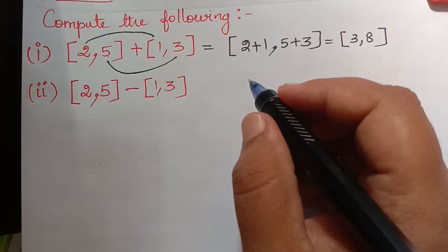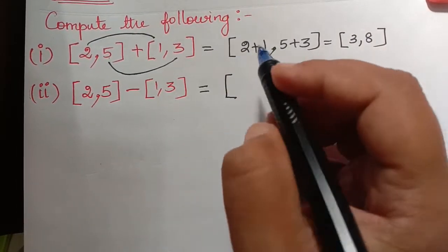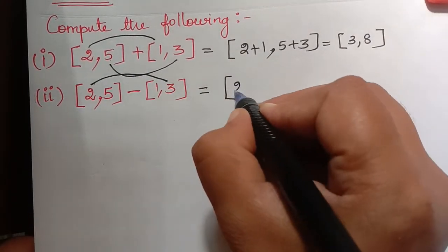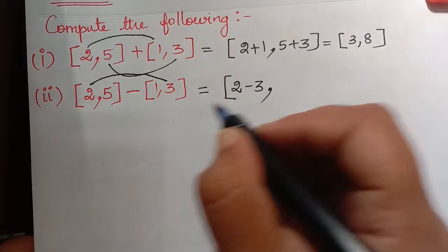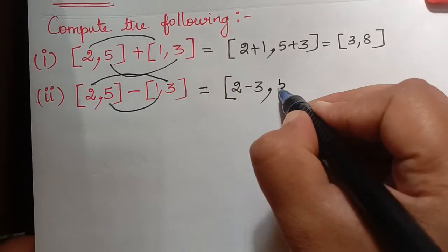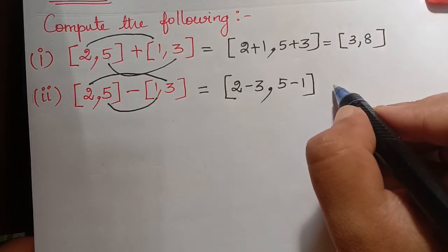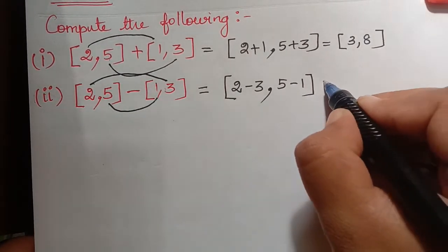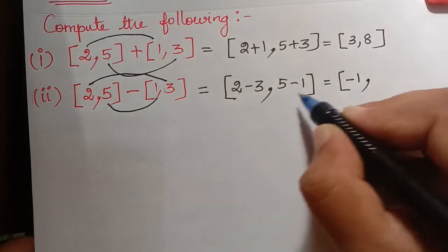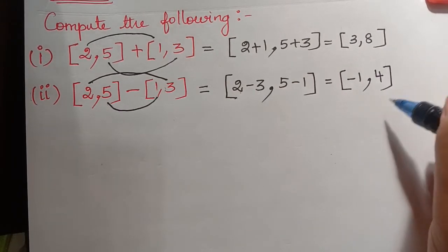The next example is subtraction. [2, 5] minus [1, 3]. We compute a minus e and b minus d: that is 2 minus 3 and 5 minus 1, which gives [−1, 4]. This is the subtraction operation.